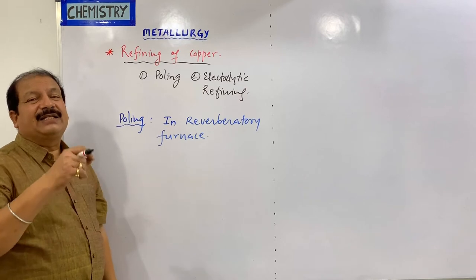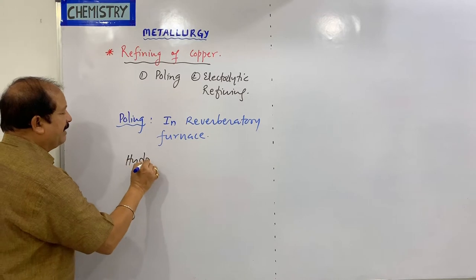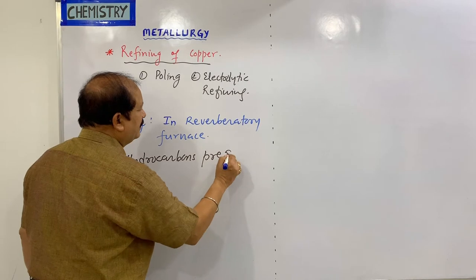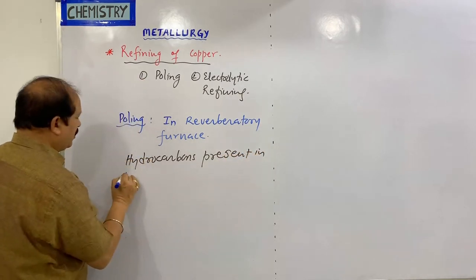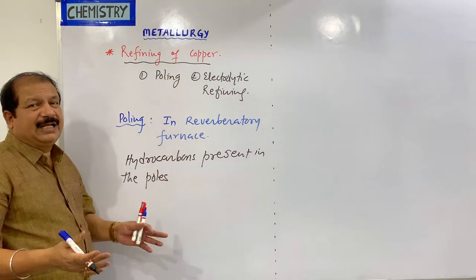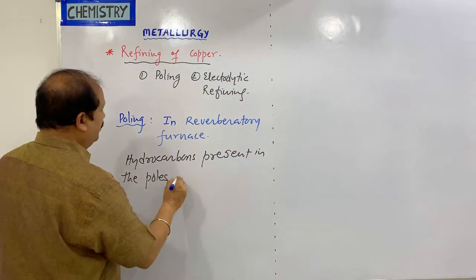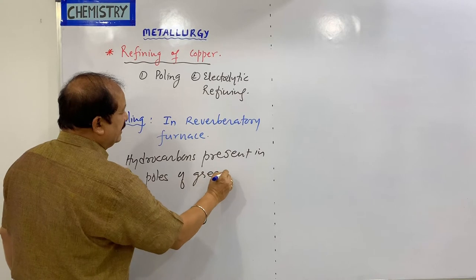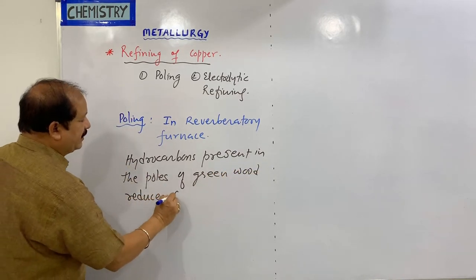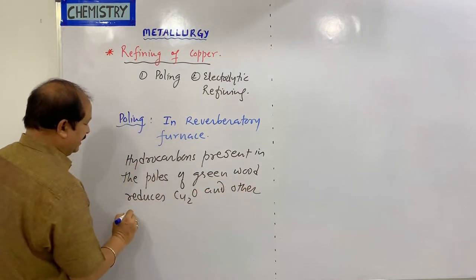These green poles contain hydrocarbons. The hydrocarbons present in the poles of green wood reduce CO₂, CO, and other impurities in the reverberatory furnace.